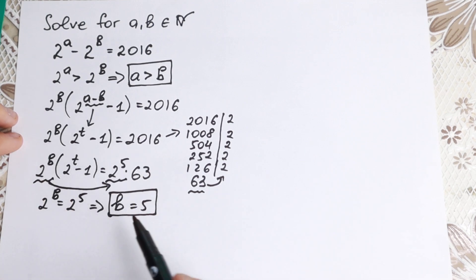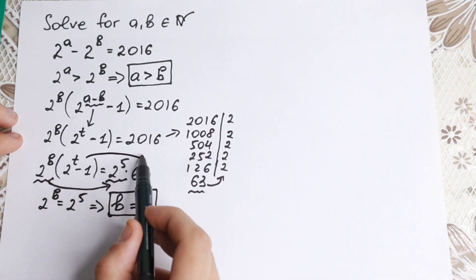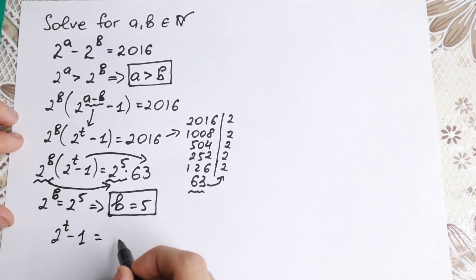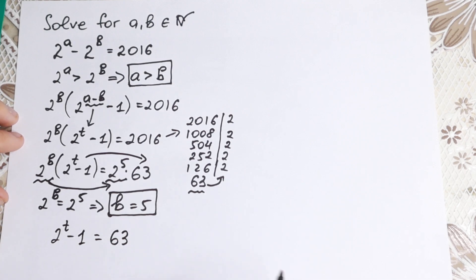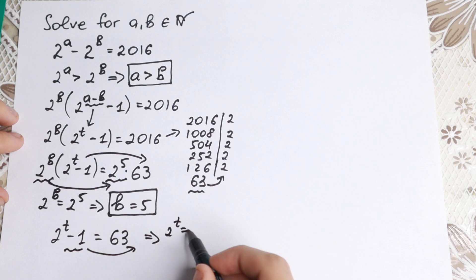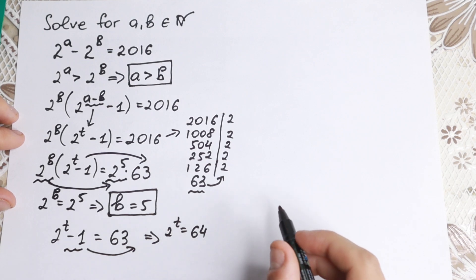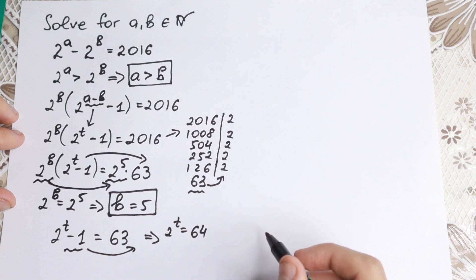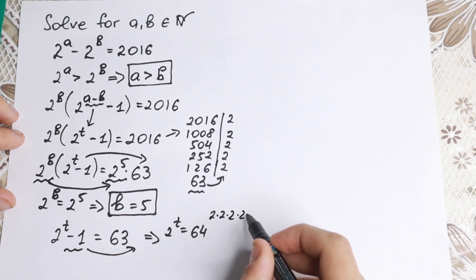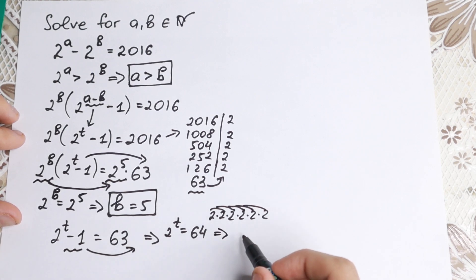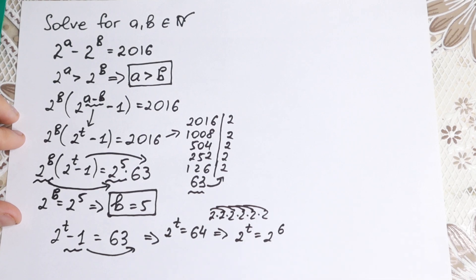With b resolved, we still have 2 to the power t minus 1 equal to 63. Adding 1 to both sides: 2 to the power t equals 64. Since 2 × 2 × 2 × 2 × 2 × 2 = 64, that is 2 to the 6th power, so t equals 6.